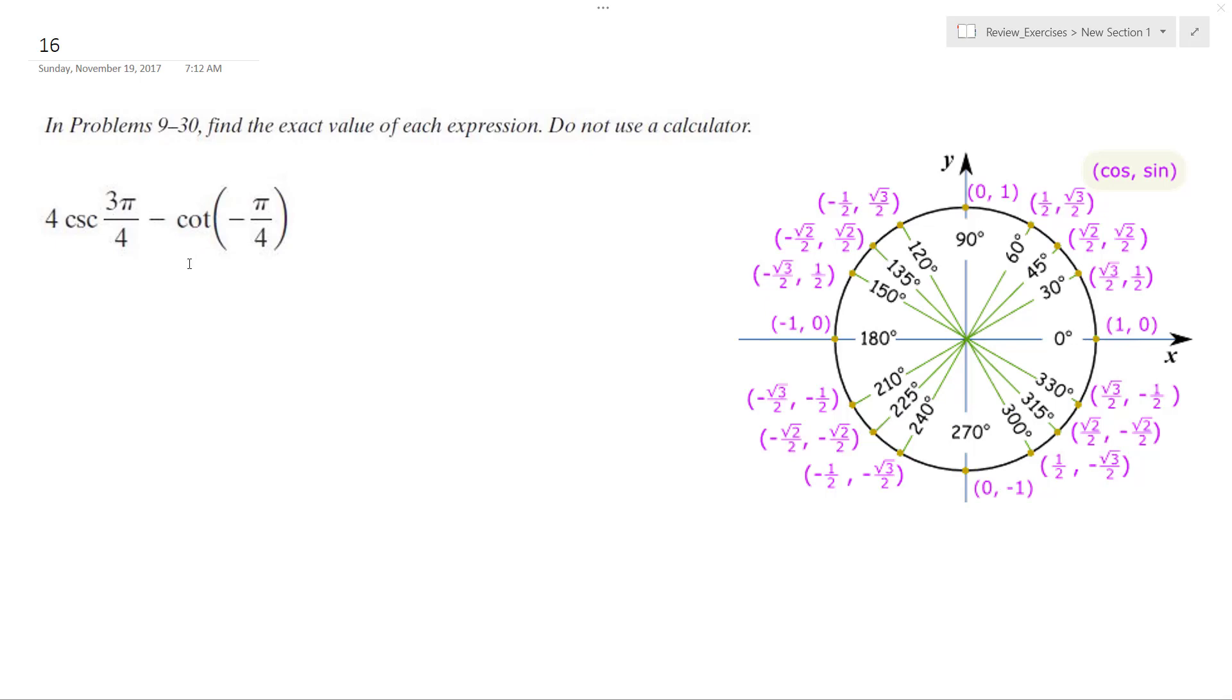All right, solving this problem. First thing I'm going to do: cosecant is the same thing as 1 over the sine of 3 pi over 4.